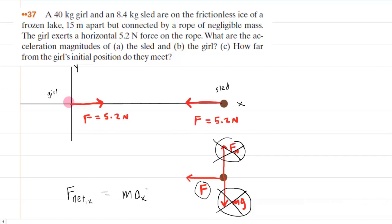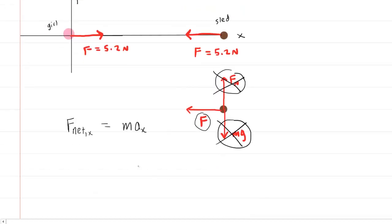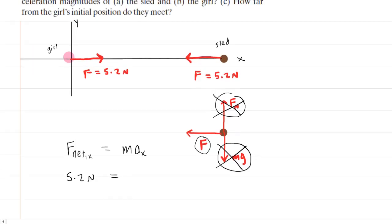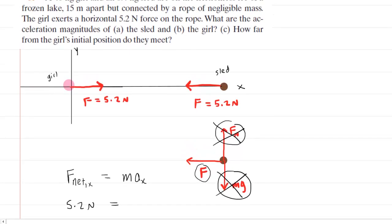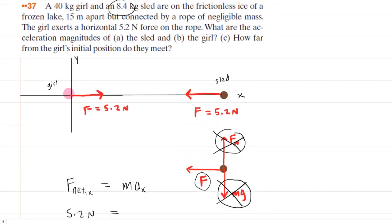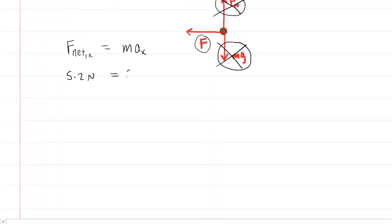The net force acting on the sled is the force that the girl is exerting — the 5.2 Newtons. This equals the mass of the sled, given as 8.4 kilograms, times the sled's acceleration, which is what we're solving for in part A.